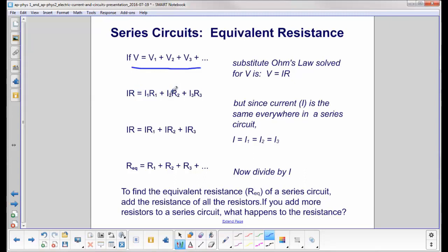I1R1, I2R2, I3R3. But the current is the same everywhere in a series circuit. So I equals I1 equals I2 equals I3. In this case, we're working with three resistors, not the two that we had on the previous slides.